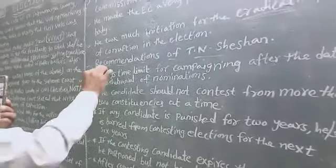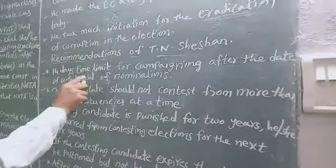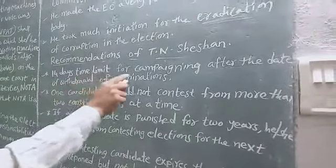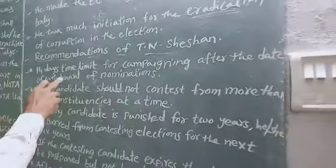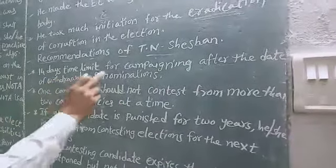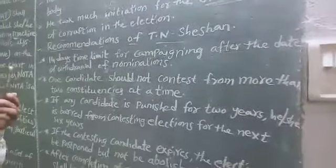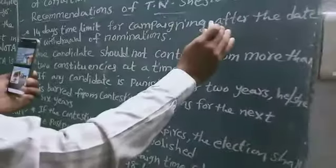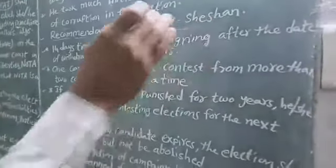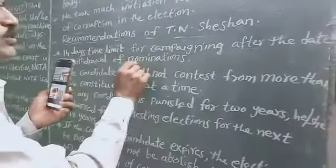What are the recommendations of the T.N. Seshan session? A fourteen-day time limit for campaigning after the withdrawal of nomination. Among those who contest under nomination, there is withdrawal and scrutiny. After scrutiny, any rejected candidates are noted.